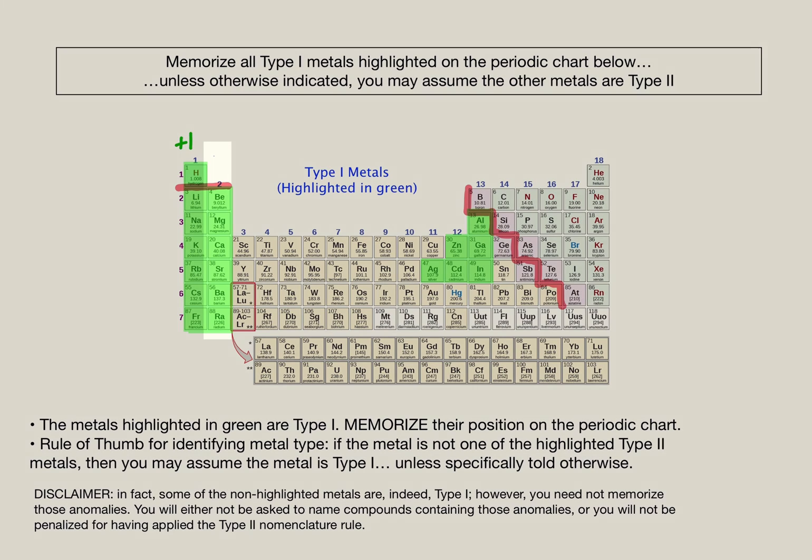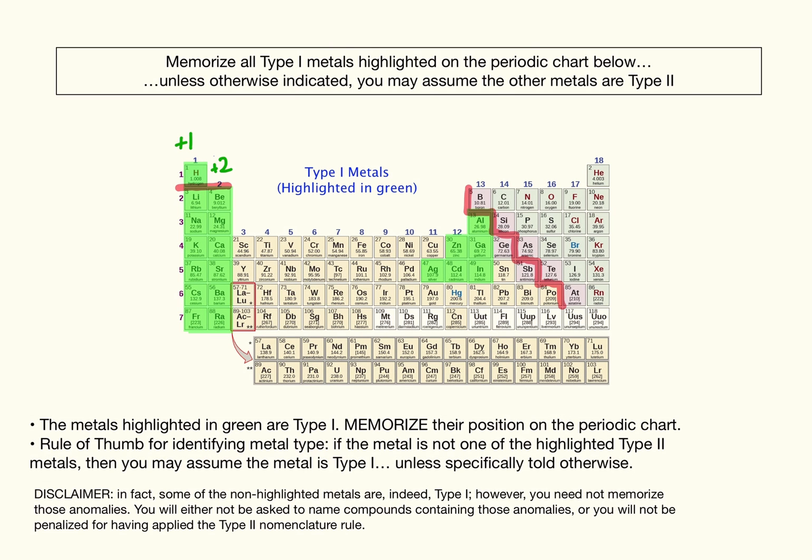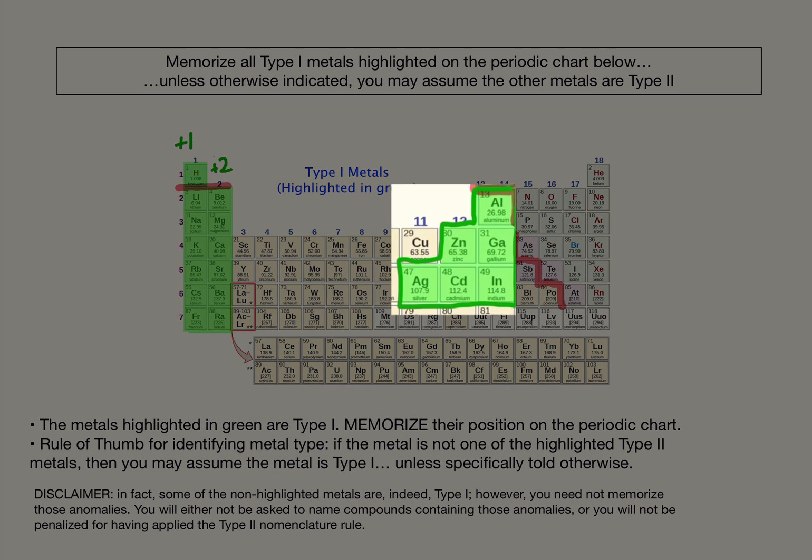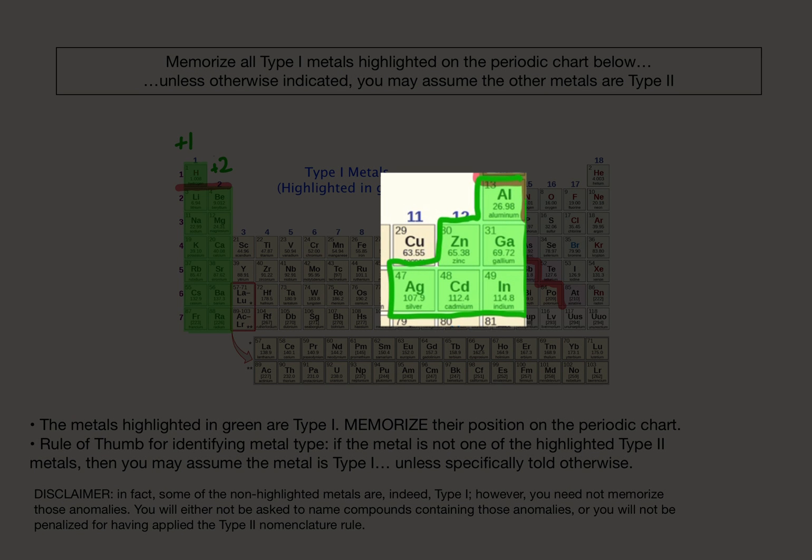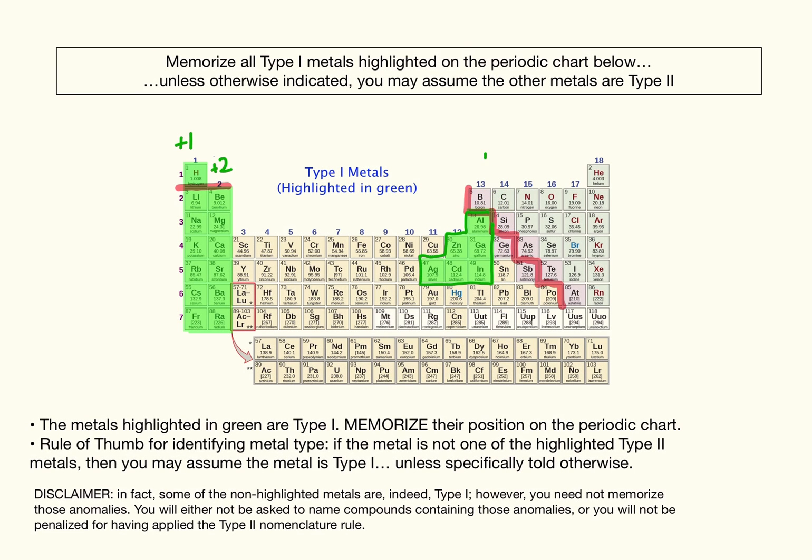All Group 2 metals are Type 1 metals that have a charge of plus 2. And the only other ones I want you to memorize are these six shown on the right. Students sometimes refer to this as the six pack since there's six of them. And I've chosen these six because they're easy to memorize.